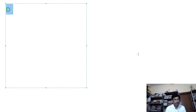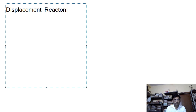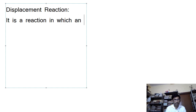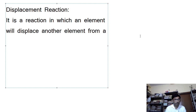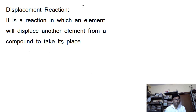Today we are going to see what a displacement reaction is. It is a reaction in which an element will displace another element from a compound to take its place. Let me try to explain this with the help of an illustration.